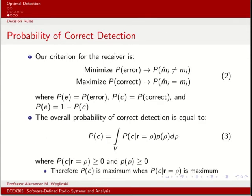Now that we have the statistical side under control, let's derive what the probability of correct detection is — because that's how we'll find our optimal rule. Our criterion for the receiver is to minimize the probability of error. It's probably unavoidable, but we want to keep it as small as possible. This is equivalent to maximizing correct detection at the receiver, since the probability of error equals 1 minus the probability of being correct — as the maximum probability in any situation is 1.